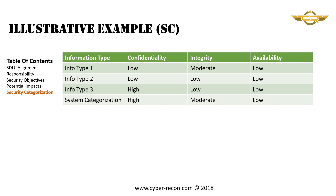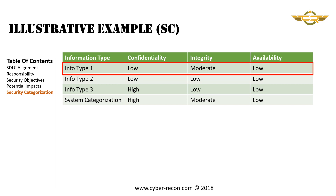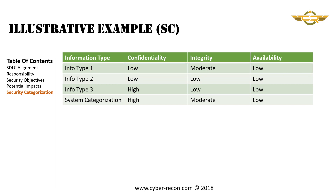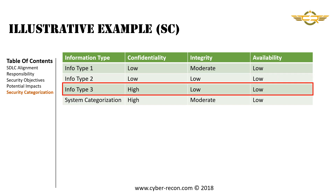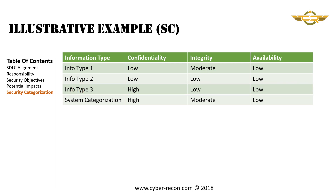To help explain the determination of an information type, let's look at an illustrative example with three information types. Information type 1 has a confidentiality of low, an integrity of moderate, and an availability of low. Information type 2 has a confidentiality of low, an integrity of low, and an availability of low. Information type 3 has a confidentiality of high, an integrity of low, and an availability of low. We have now determined the information categorization of these three information types.